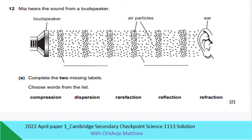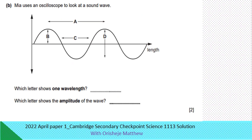Question 12. Men hear sound from a loudspeaker, and this is the representation of the sound wave. The dots represent the particles. Where the particles are closely packed, that is compression. While the particles are further apart, that is rarefaction. We are using an oscilloscope to look at the wave. The wavelength is measured from crest to crest. The amplitude is measured from the point of equilibrium to the point of maximum displacement — that is B.